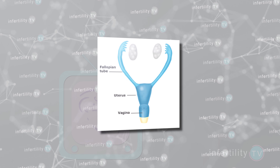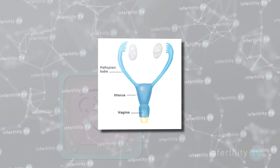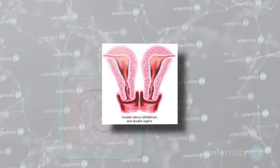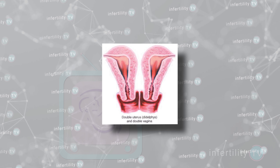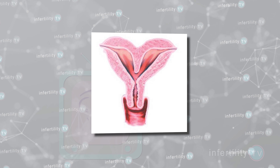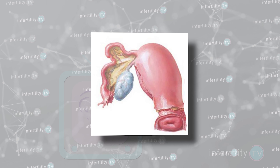The upper part stays separate and these become the fallopian tubes. In some cases, this process doesn't work like it's supposed to, so women can be born with the right and left half of a uterus that is completely separated or partially separated. This is called a uterus didelphys and a bicornuate uterus. Sometimes one side doesn't develop and you end up with half of a uterus.